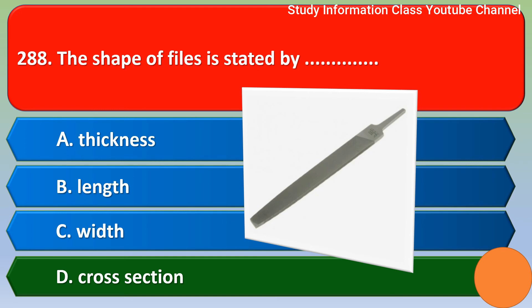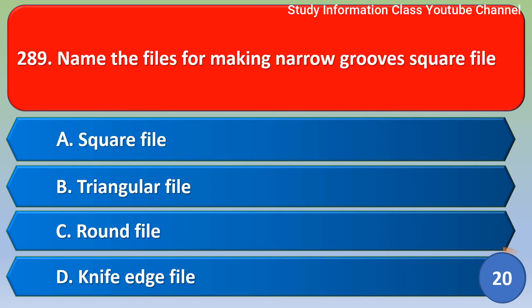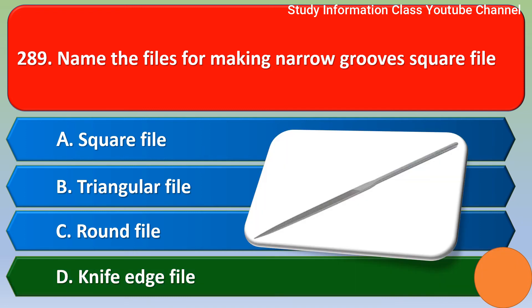Name the file for making narrow grooves: Option A, square file; Option B, triangular file; Option C, round file; Option D, knife edge file. The right answer is Option D, knife edge file.